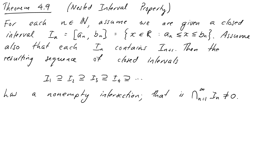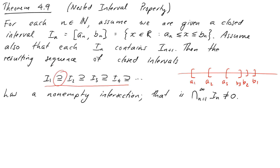The way this theorem is set up: we have our number line with a whole sequence of closed intervals. Here might be [a₁, b₁], and then inside that we have [a₂, b₂], then [a₃, b₃] — the defining feature being that each one is enclosed within the previous one. We can write them as a sequence where I₁ contains I₂ (the bar on the bottom means it could potentially be equal), and the theorem states that this collection of nested intervals has a non-empty intersection.